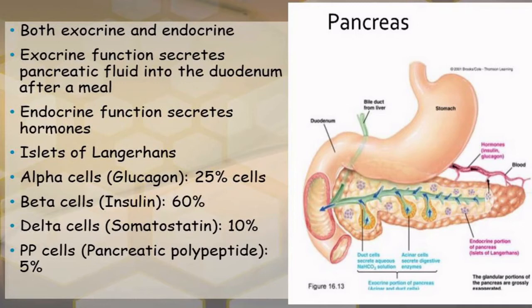The pancreas consists of several types of cells, particularly what are called the islets of Langerhans. The islets of Langerhans include alpha cells, beta cells, delta cells, and PP cells or pancreatic polypeptide cells. The major portion — approximately 60% — are beta cells which synthesize insulin, about 25% are alpha cells, the delta cells synthesize somatostatin, and the remaining 5% are PP cells which secrete pancreatic polypeptide.